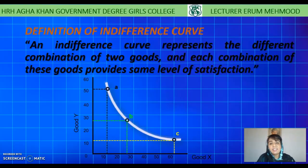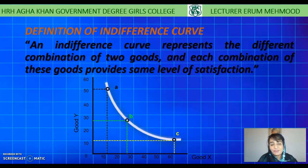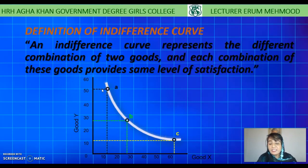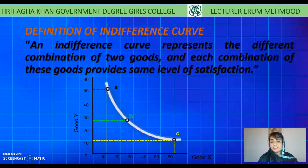What is an Indifference Curve? An indifference curve represents the different combinations of two goods, and each combination of these goods provides the same level of satisfaction. This white line curve represents the indifference curve and it is the locus of points A, B, C and many more. These points represent different bundles of good X and Y, but at each point the level of satisfaction remains constant.